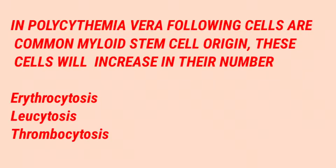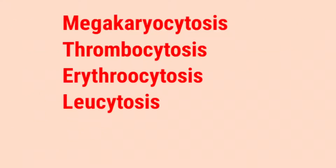These are the specific features of polycythemia because the defect is in the common myeloid progenitor. When the cell has a defect in the myeloid stem cells, we will see megakaryocytosis, thrombocytosis, erythrocytosis, and leukocytosis.